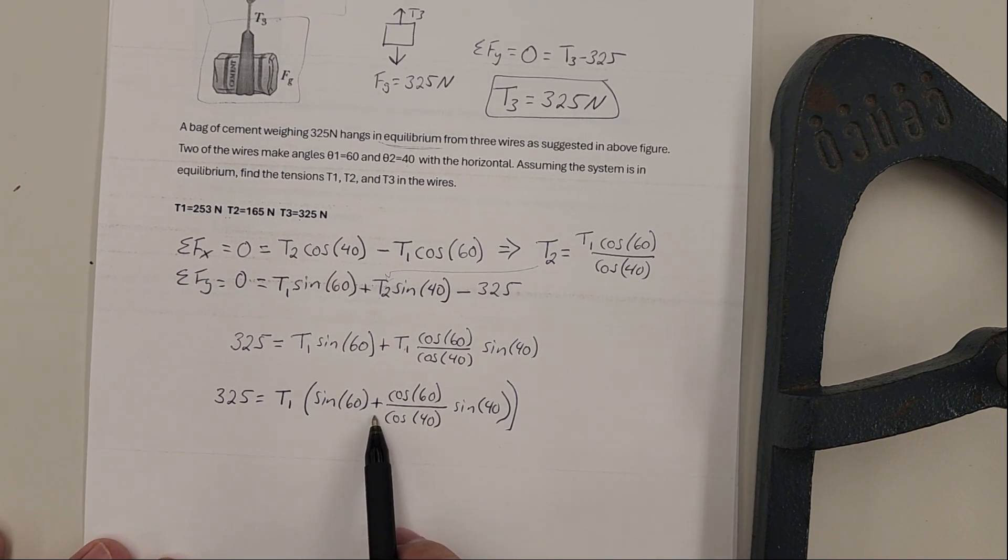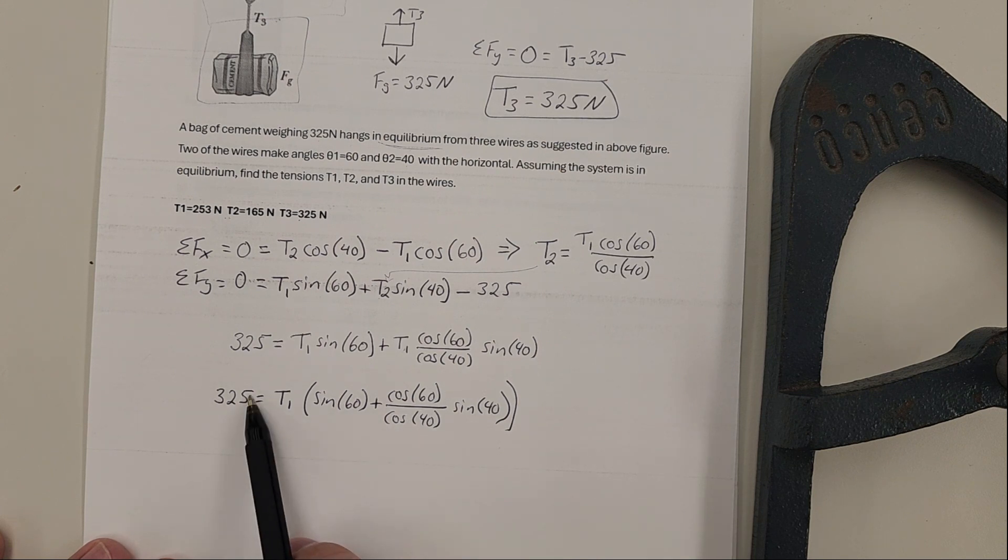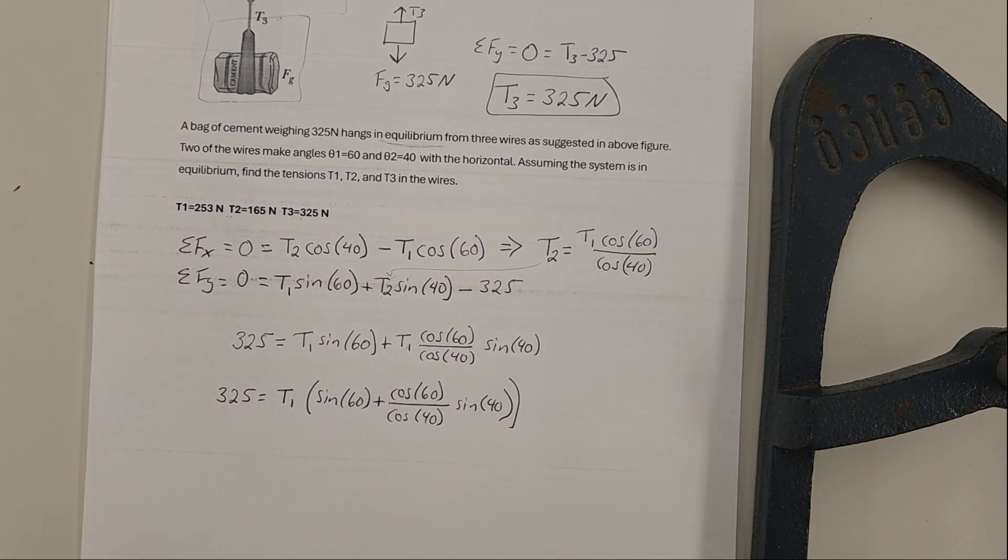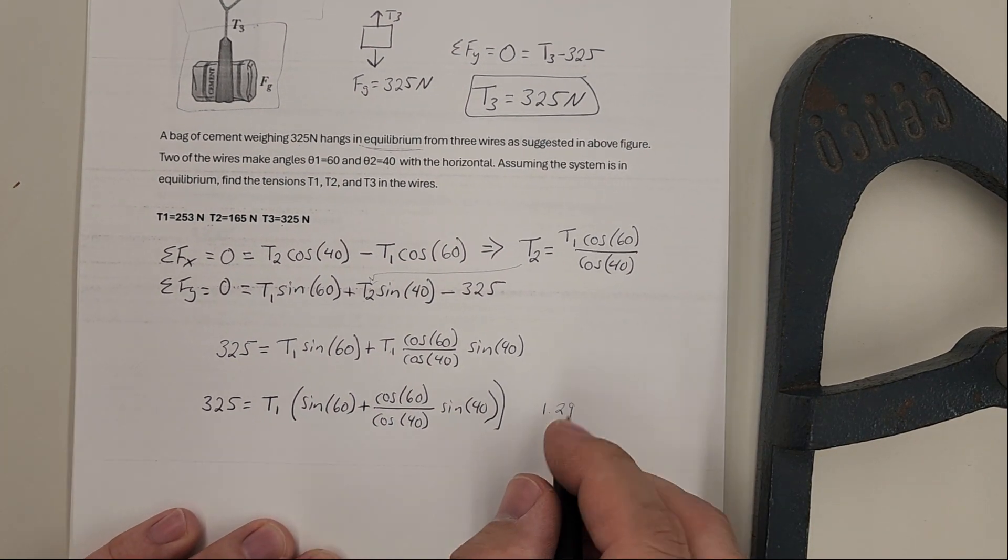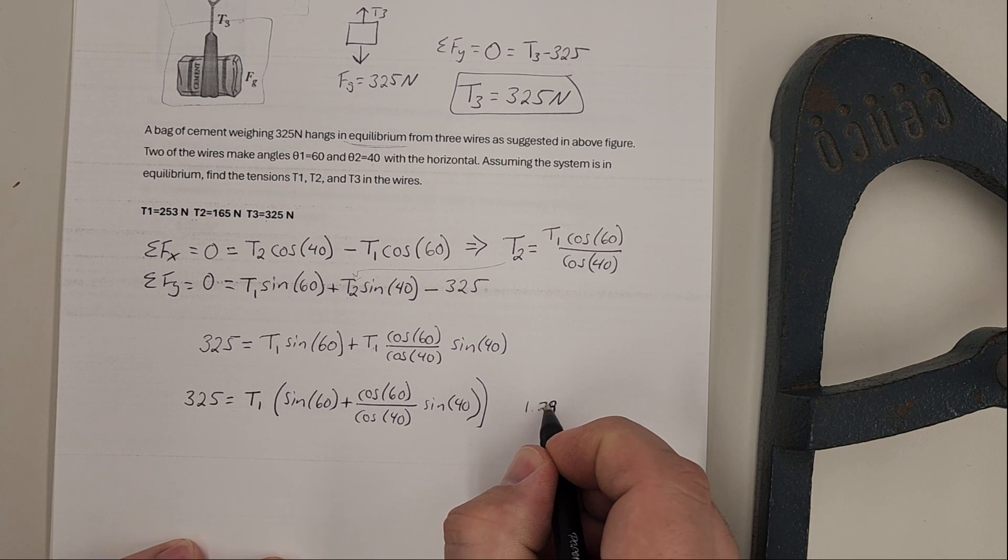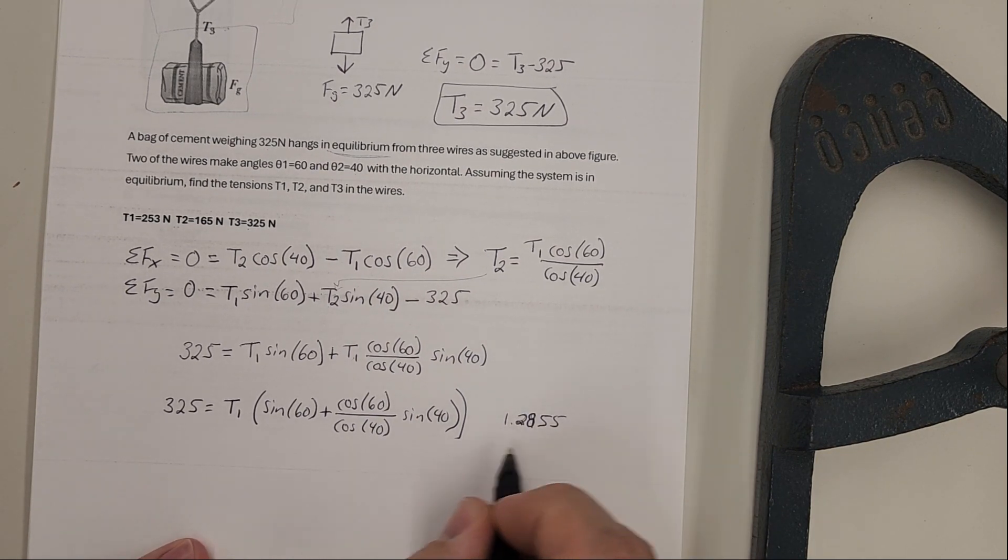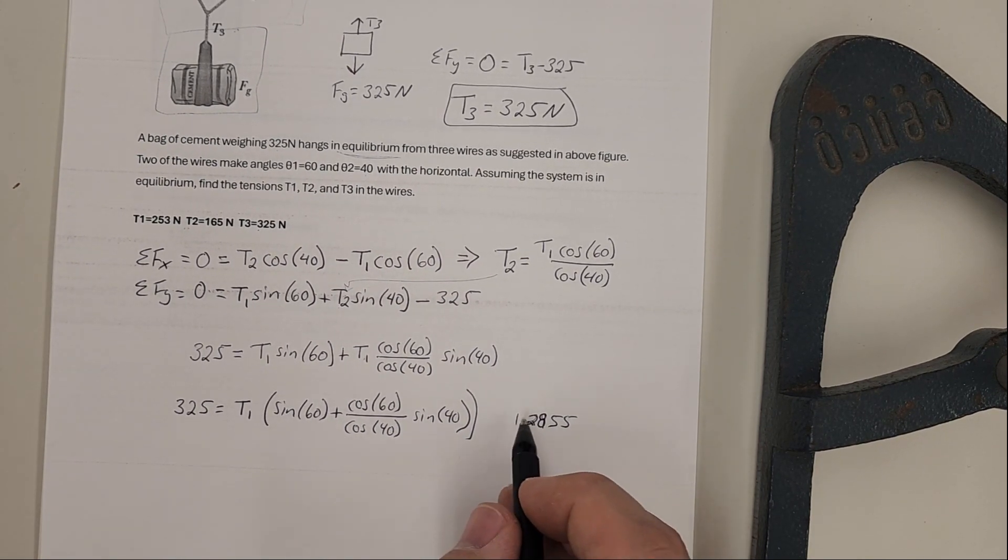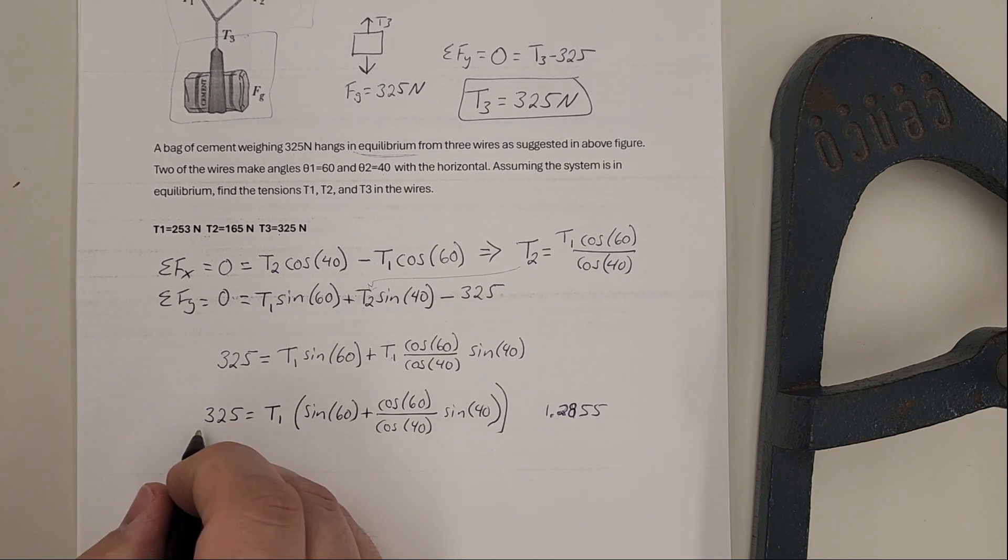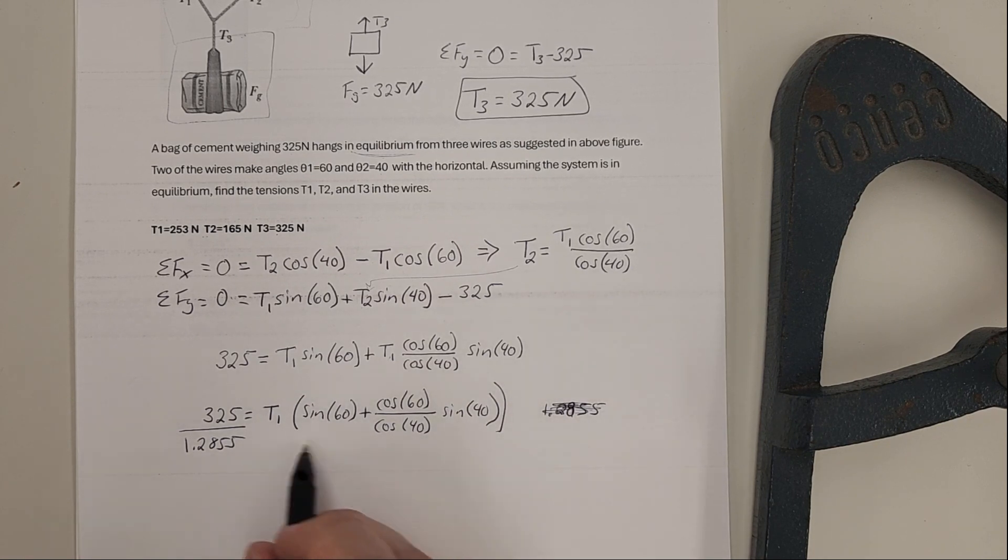Your calculator can figure that - that's just a number for you. What we're going to do is take that number and we're going to divide it onto the other side to get T1. If you plug this number into your calculator, you get 1.2855 and it keeps on going. You can just leave it as that. Dividing this to the other side, we'll divide by 1.2855.